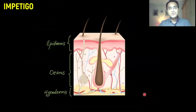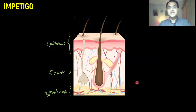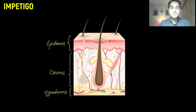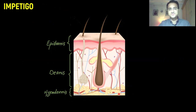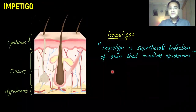What is impetigo, how does it present, and how do you treat it? Today we are going to talk about that. First of all, we have to understand the anatomy of skin. Skin contains three layers: the top one is called the epidermis, the middle one is the dermis, and the lower one that contains the vessels is the hypodermis.